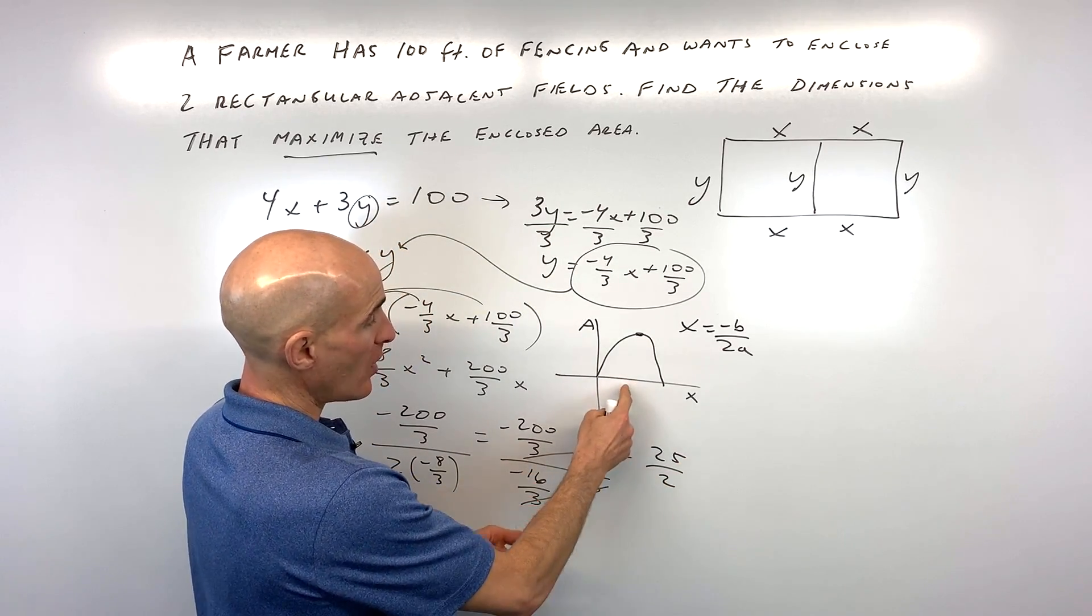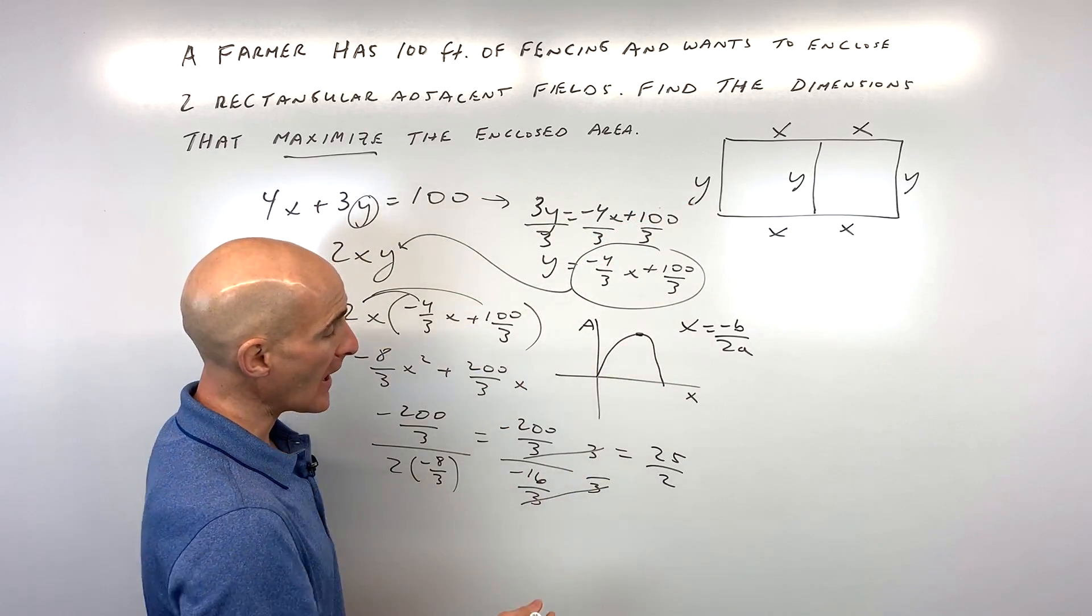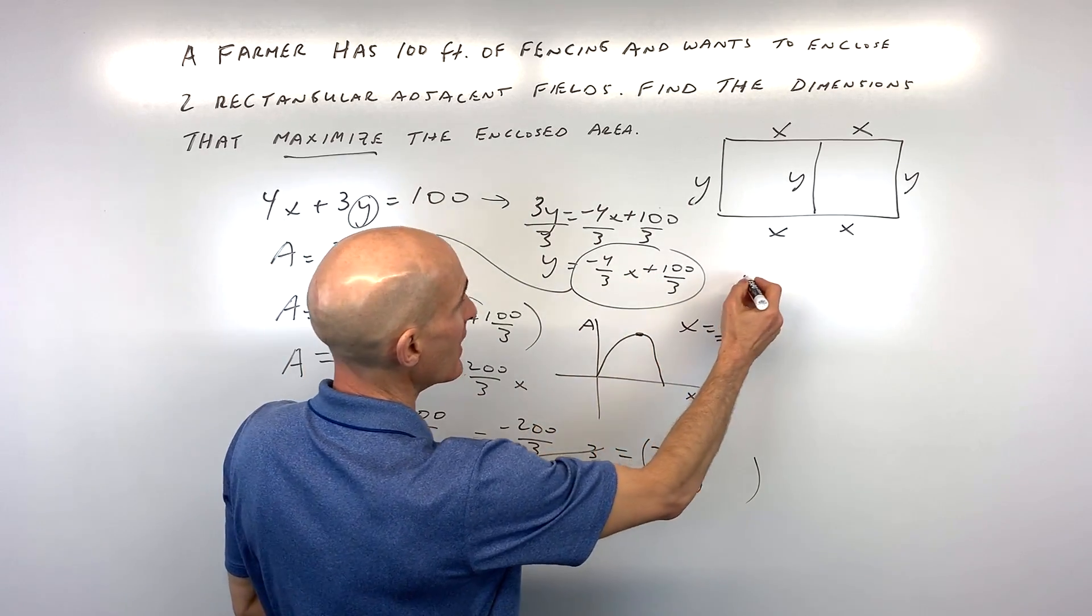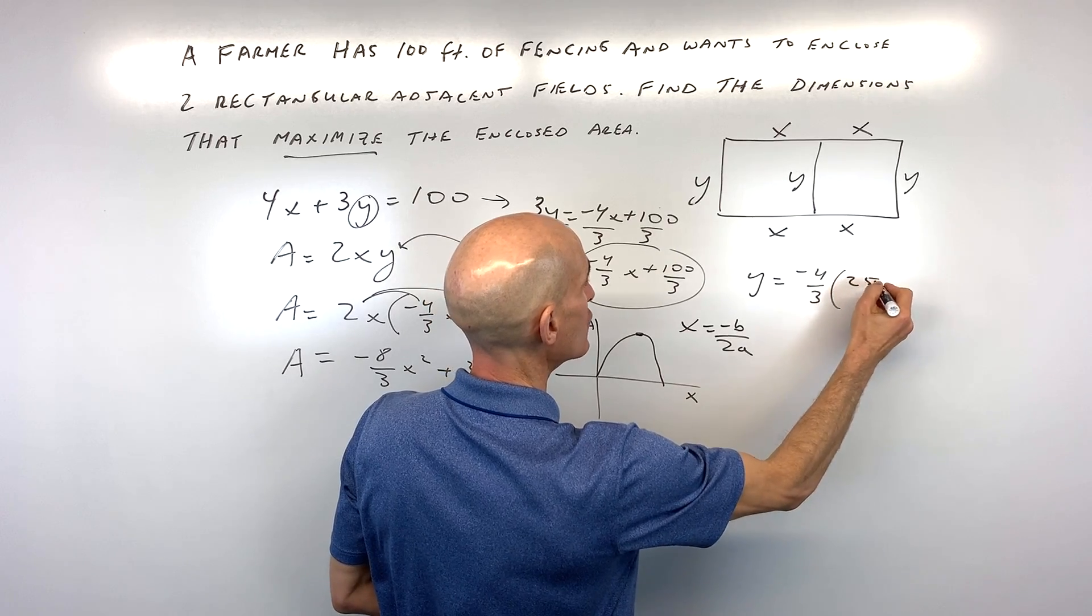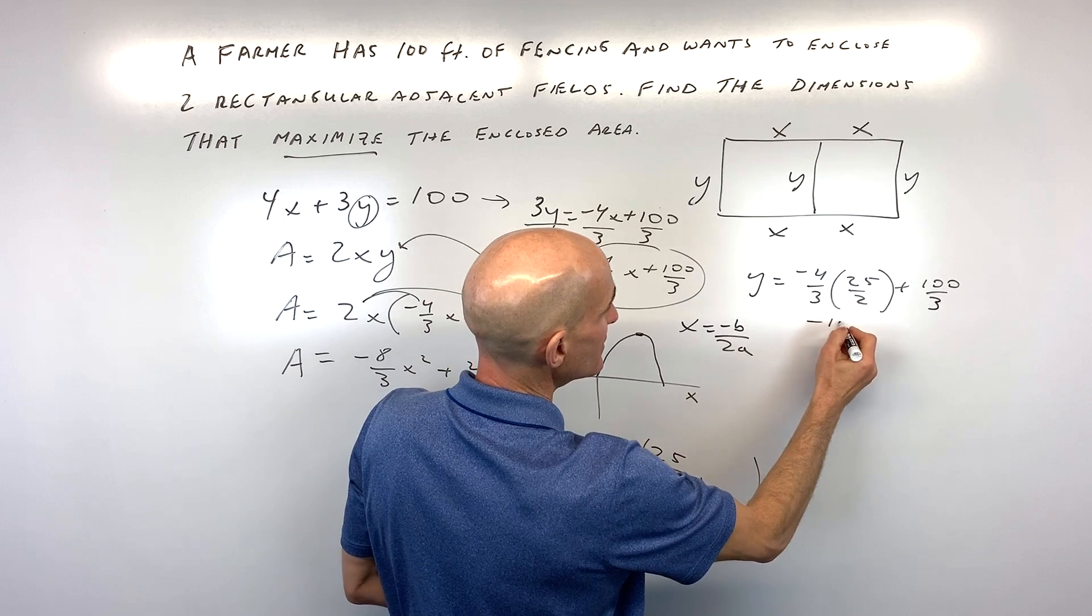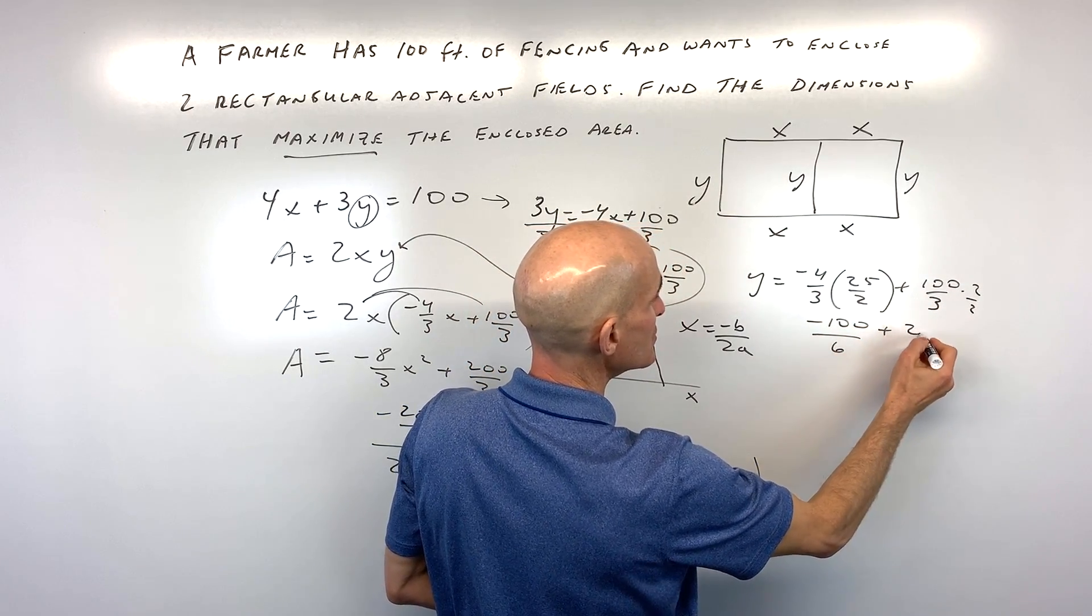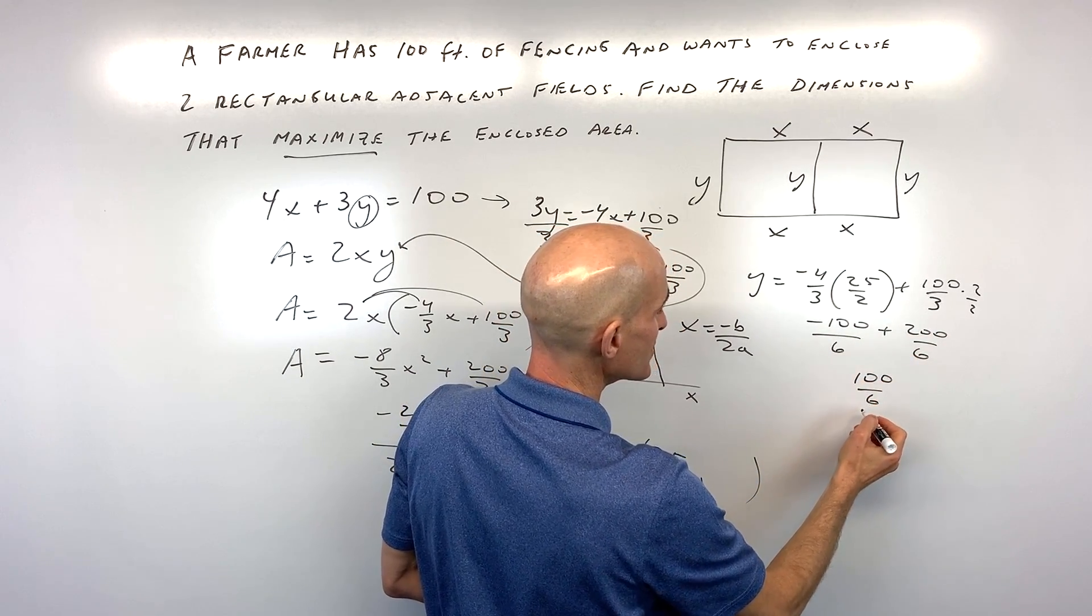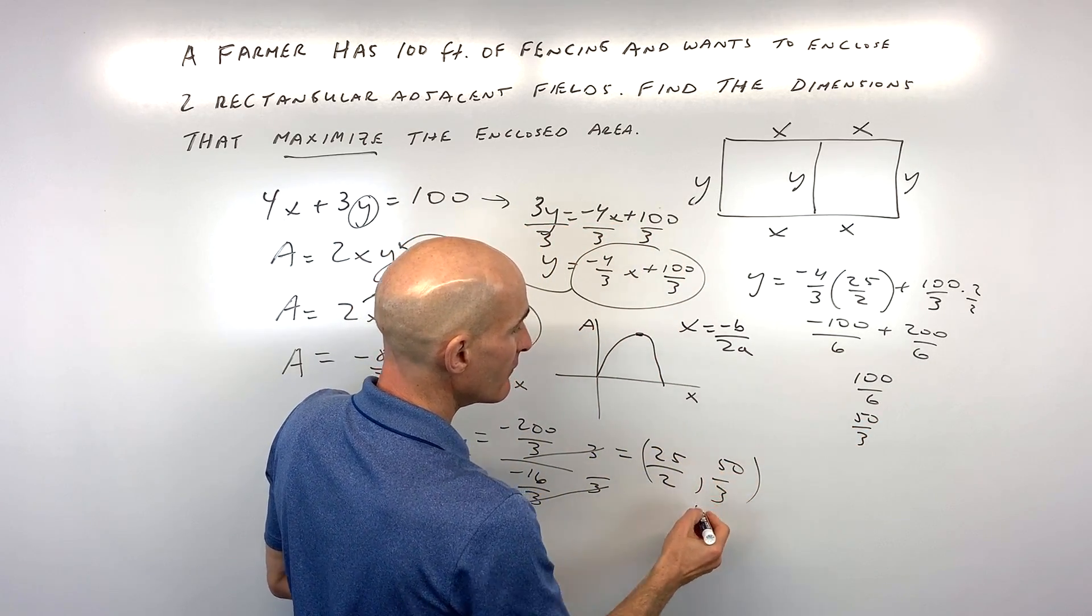So that means when X is 12 and a half, that's going to maximize our area. But let's find out what the other dimension is, Y. And I'm going to do that by putting this back in for X here. So we have Y equals negative 4 thirds times 25 over 2 plus 100 over 3. So this comes out to negative 100 over 6. This, if I multiply the top and bottom by 2, is 200 over 6, which when we add those together gives us 100 over 6. Or you could reduce that to 50 over 3. So that would be the Y value.